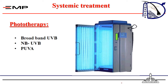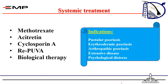Phototherapy options include broadband ultraviolet B, narrowband ultraviolet B, or PUVA — psoralen and UVA. Systemic treatments are reserved for patients with severe disease and include methotrexate, acitretin (a retinoid), cyclosporine A, Re-PUVA — retinoids plus psoralen and UVA — and, most recently, biological therapy. Systemic treatment is indicated for patients with pustular psoriasis, erythrodermic psoriasis, arthropathic psoriasis, extensive disease, or patients with significant psychological distress from their disease.